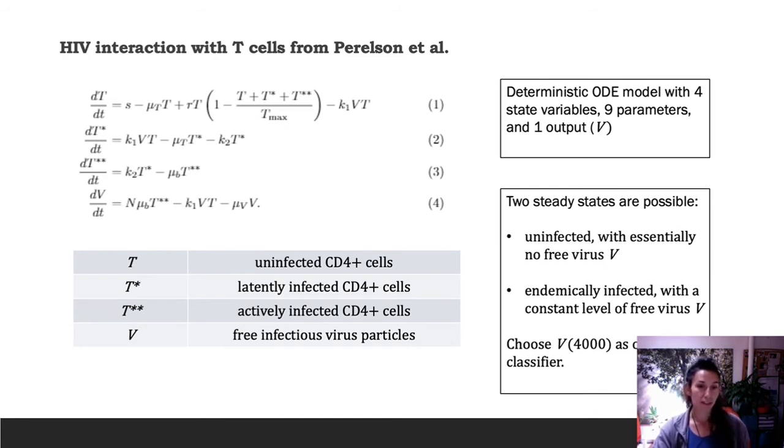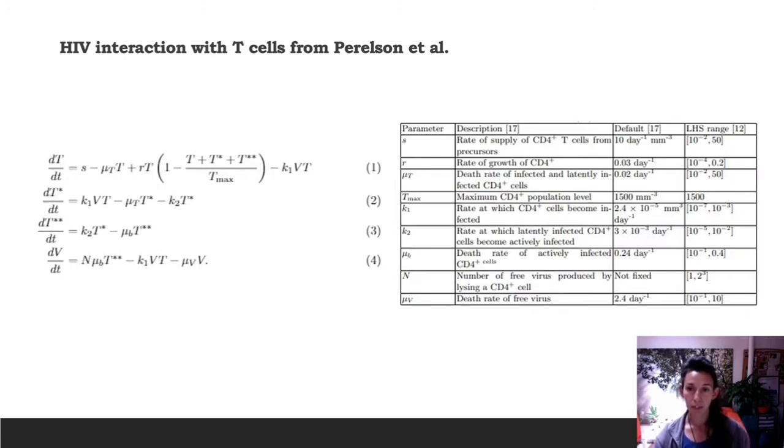What I've chosen here is the free infectious virus particles at day 4000, and that will be the classifier to sort between the two possible outcomes: either uninfected or endemically infected at that time. In this case, the parameter for the maximum T cell population T_max was fixed, and all the other parameters were sampled from a uniform distribution to create the data matrix. The table there shows the default parameters that were used for analysis in Perilsen et al. and the parameter ranges that were used for Latin hypercube sampling in Merino et al. I chose this benchmark example to compare to analytic methods and statistical methods that have been used previously on this model.